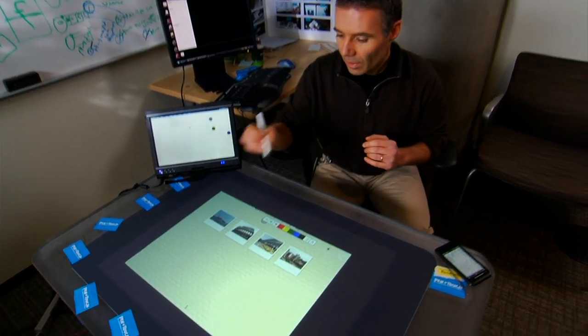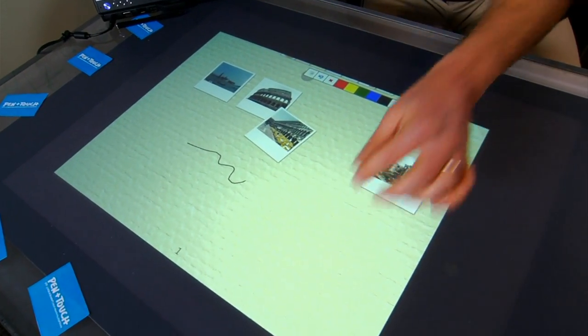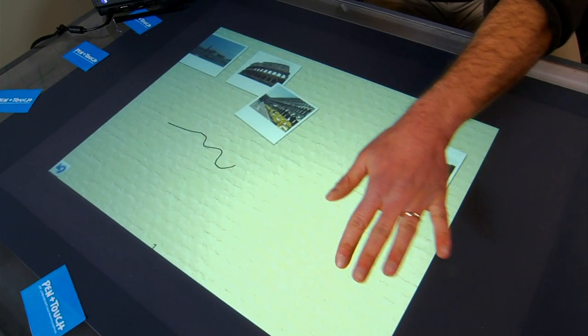By default, the pen writes and touch manipulates. You can also use touch to zoom and pan and so on.